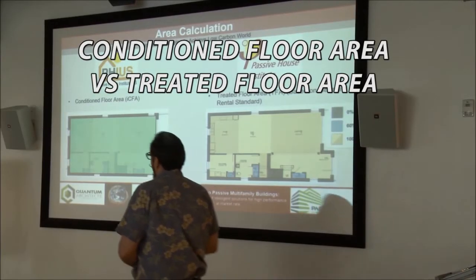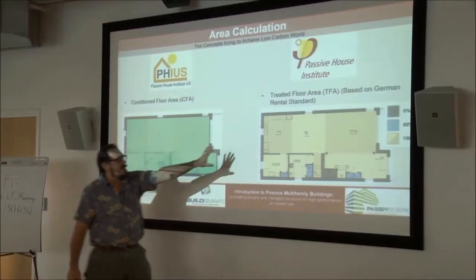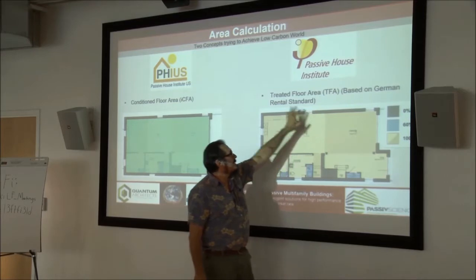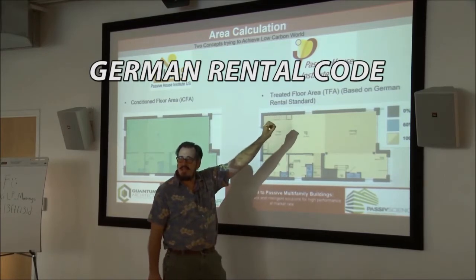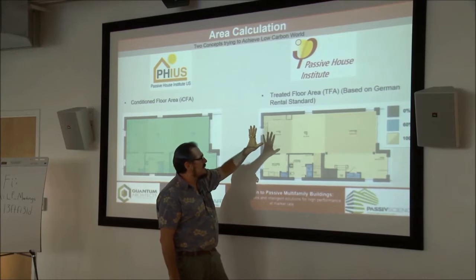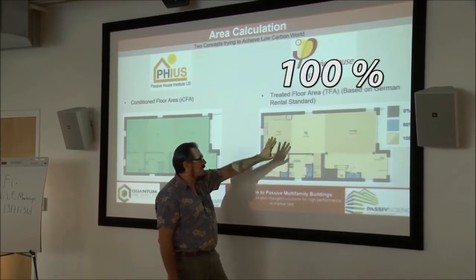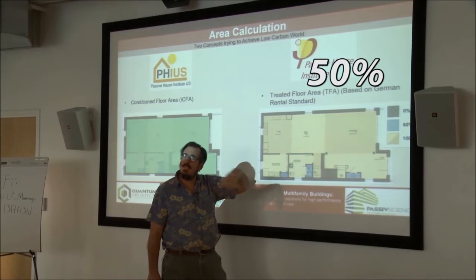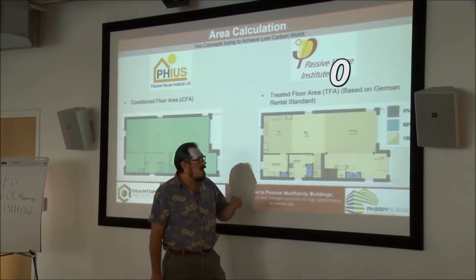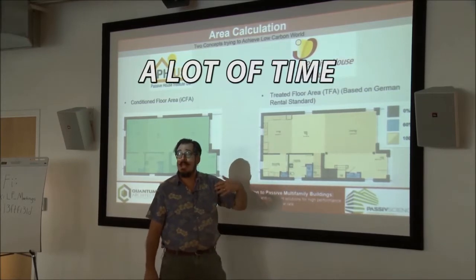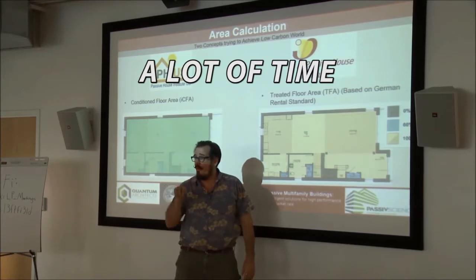Conditioned floor area versus TFA — this is just a metric. The German Treated Floor Area is based on the German rental code, under which you can count some areas as 100% square footage, some areas at 60%, some at 50%, and some at zero. People were spending a lot of time figuring out what the treated floor area of a building is.